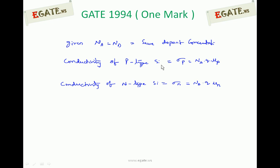Conductivity of p-type, sigma p equals Na into q into mu p. Whereas conductivity of n-type in silicon is sigma n equals Nd into q into mu n.